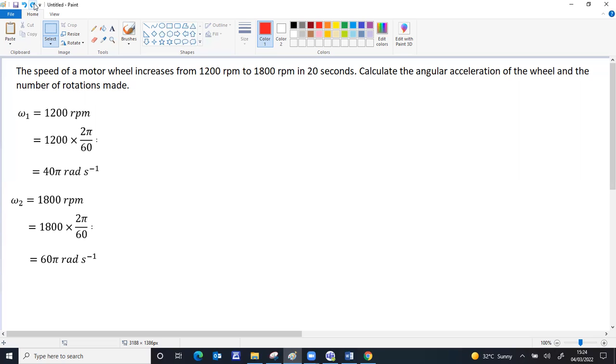Now you can directly calculate the angular acceleration using the formula ω₂ minus ω₁ by Δt. The time interval is already given as 20 seconds. So 60π ω₂ minus 40π ω₁ by 20, it will be 20π by 20, which is π radian per second squared. That's the first part answer, angular acceleration.